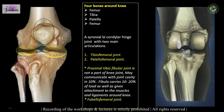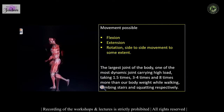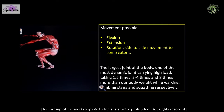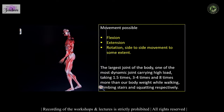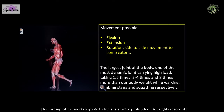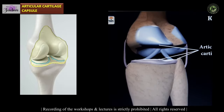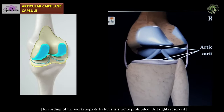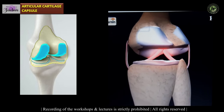We all know that the knee is a bicondylar synovial hinge joint that is capable of flexion and extension movement mainly, and also rotation and side-to-side movement to some extent. Like any other synovial joint, it has articular cartilage covering the articular surface and also a thick fibrous capsule.